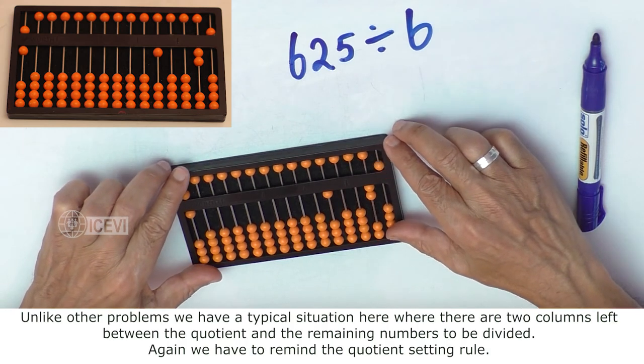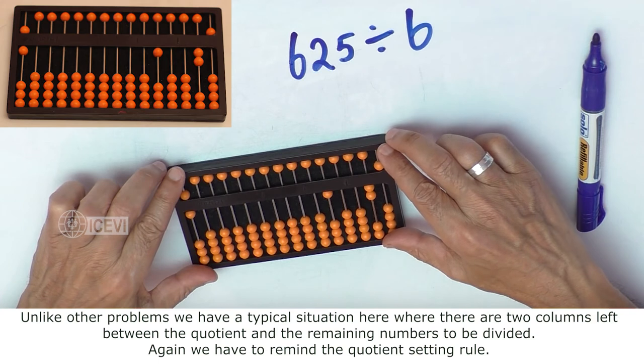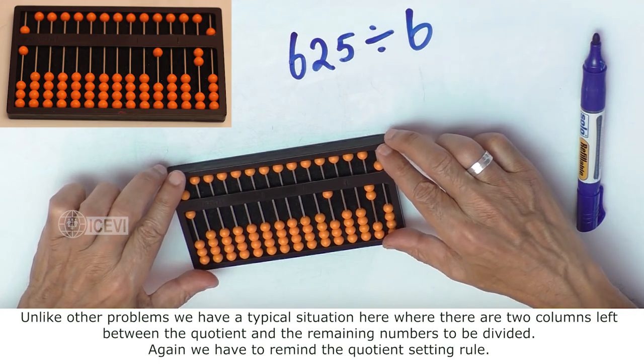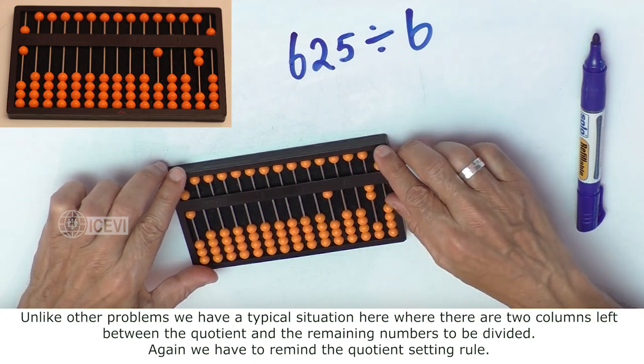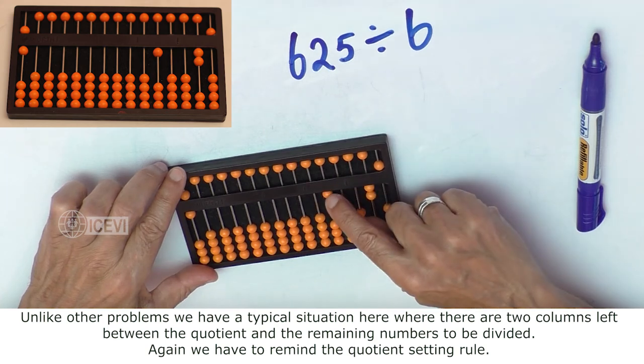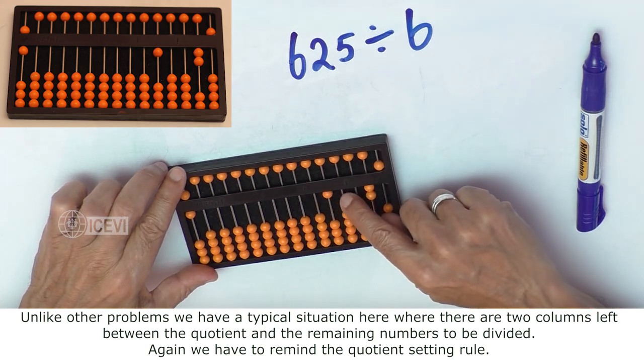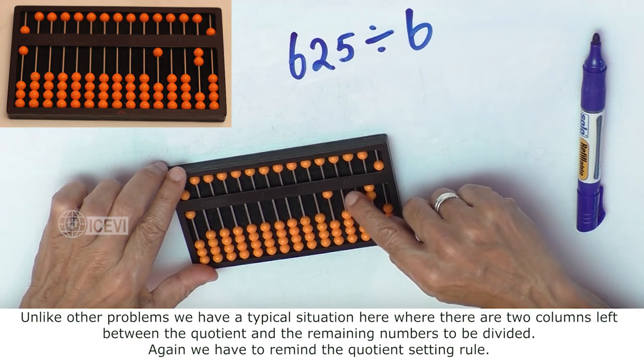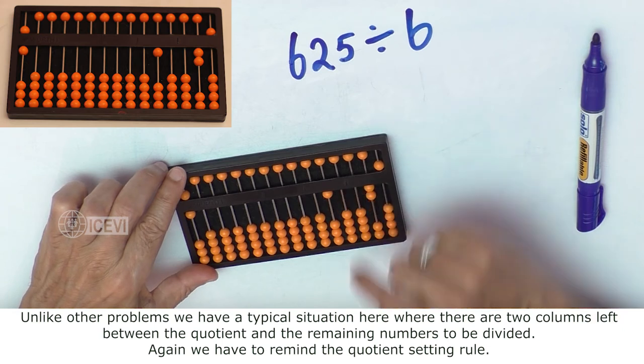Unlike other problems, we have a typical situation here where there are 2 columns to the left between the quotient and the remaining numbers to be divided. Again we have to remind the quotient setting rule.